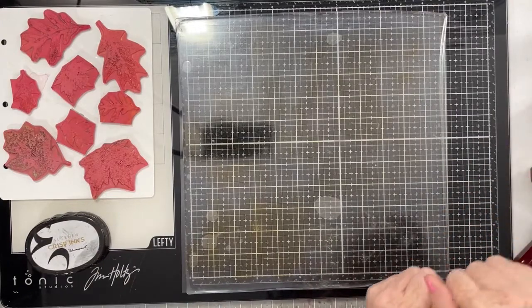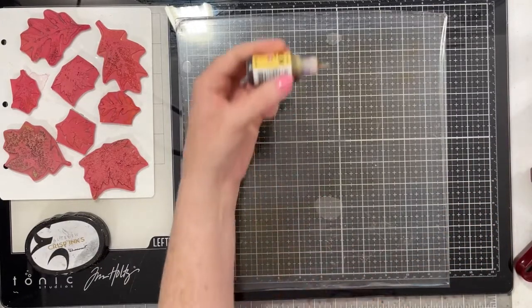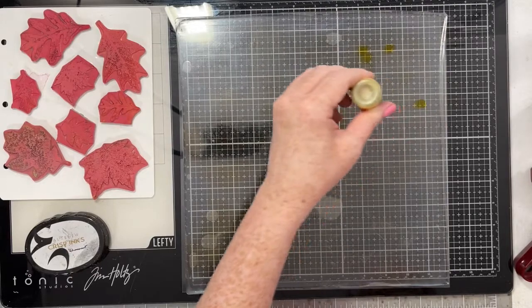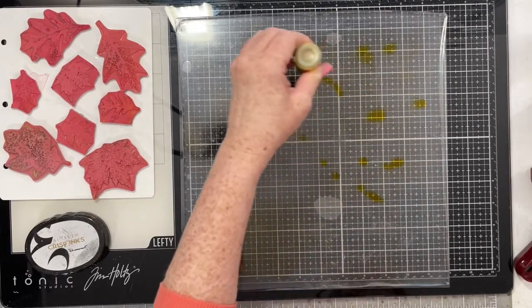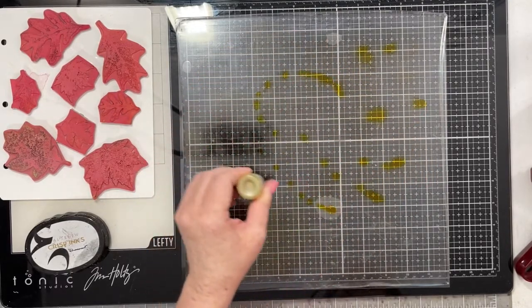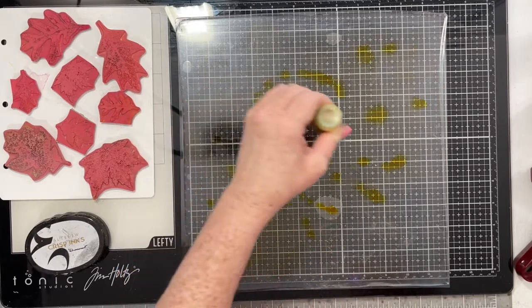And then I'm going to go ahead and take my brayer and do exactly what you do with any kind of gel press printing. I'm going to put a nice layer of alcohol ink over the entire press with the brayer.